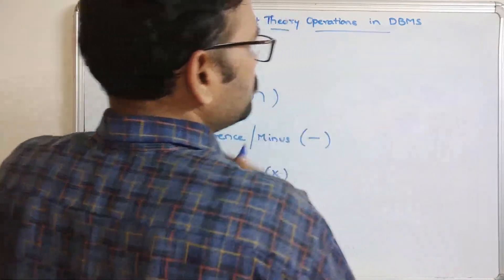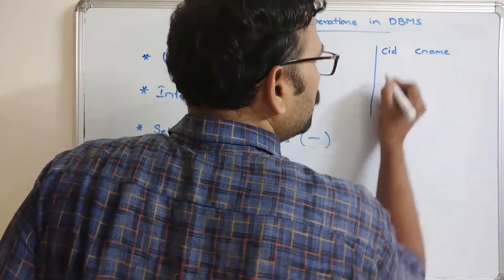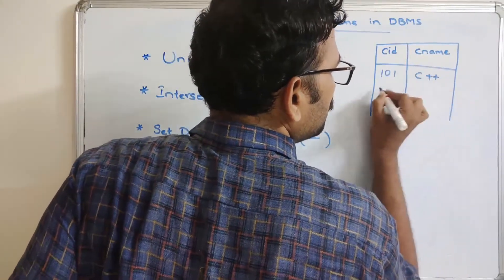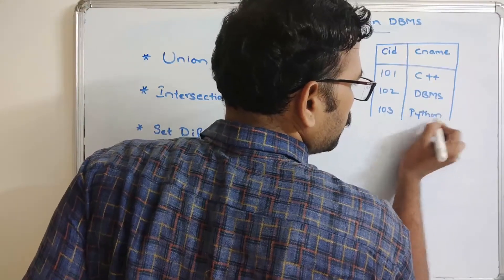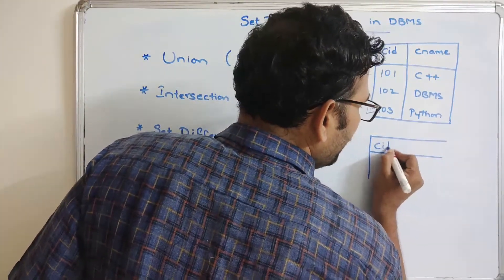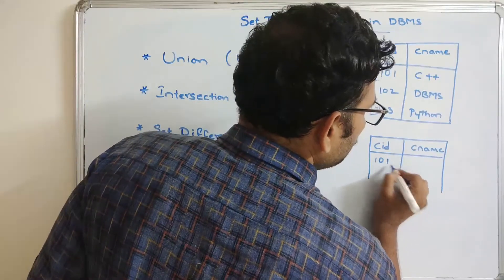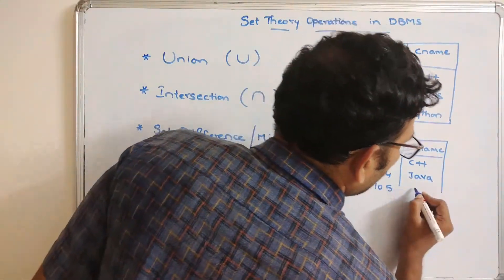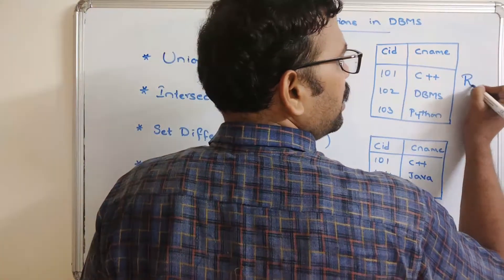Let me set up two example tables with fields course ID and course name. The first table, relation R, has: course ID 101 – C++, 102 – DBMS, 103 – Python. The second table, relation S, has: course ID 101 – C++, 104 – Java, 105 – C.